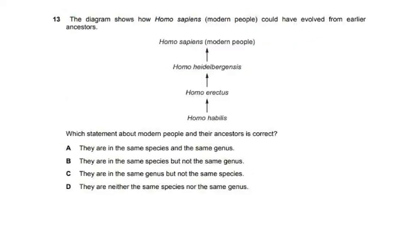Question thirteen: the diagram shows how Homo sapiens could have evolved from earlier ancestors — Homo habilis, then Homo erectus, then Homo heidelbergensis, then Homo sapiens. The genus 'Homo' is the same throughout, but the species differs each time. So they are in the same genus but not the same species. The answer is C.